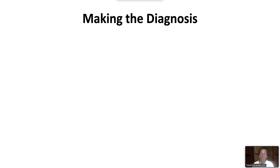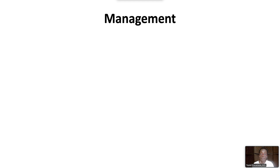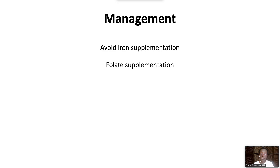Suspect the diagnosis in a patient with microcytic anemia that is unresponsive to iron supplementation. Hemoglobin electrophoresis is sometimes useful; however, a precise diagnosis is best made by genetic testing. In patients with thalassemias, avoid iron supplementation. Folate supplementation is needed due to chronic hemolysis. Chronic transfusion therapy may be needed for symptomatic anemia and/or control of extramedullary hematopoiesis. Iron chelation is needed for iron overload.